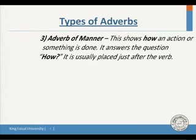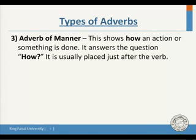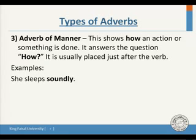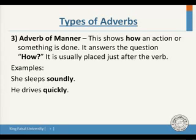Type three is the adverb of manner, which shows how an action is done. It answers the question 'how' and is usually placed just after the verb. Examples: 'She sleeps soundly' — how does she sleep? Soundly. 'He drives quickly' — how does he drive? Quickly. So 'soundly' and 'quickly' are adverbs of manner because they describe how the verb happens.